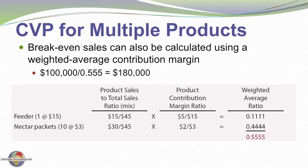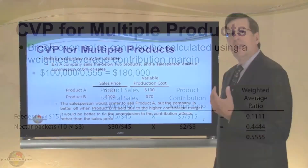We then multiply those ratios by the product contribution margin ratio. The contribution margin ratio for feeders is $5 divided by $15, and for nectar packets it is $2 divided by $3 — much higher. Multiplying each product's CMR by its proportion of total sales (one-third for feeders, two-thirds for nectar packets) gives weighted amounts of 0.111 and 0.444, which sum to a weighted average contribution margin ratio of 0.555. We divide fixed cost by this ratio to find the break-even point in sales dollars.